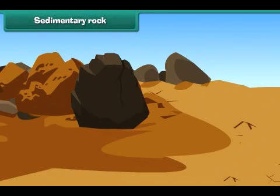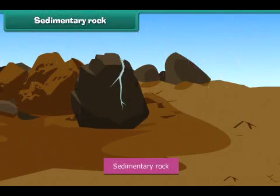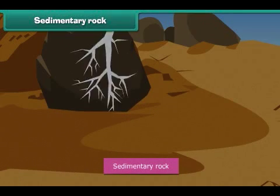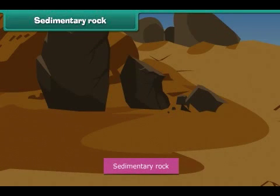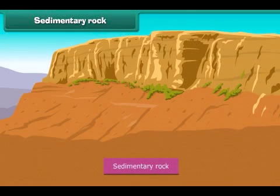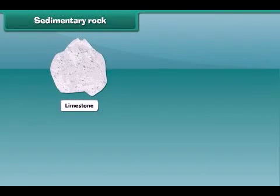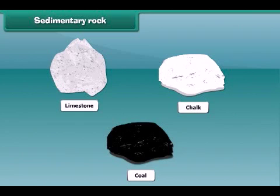Now let's discuss sedimentary rock. Water and air break igneous rocks into smaller rocks, and consequently soil is formed. These pieces settle into layers, then these layers get compressed and harden, and finally become sedimentary rock. Sedimentary rock is usually soft to touch. Limestone, chalk, and coal are examples of this kind of rock.